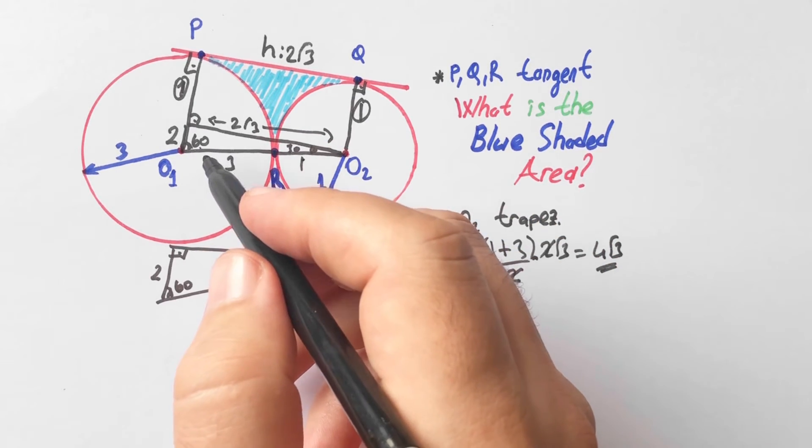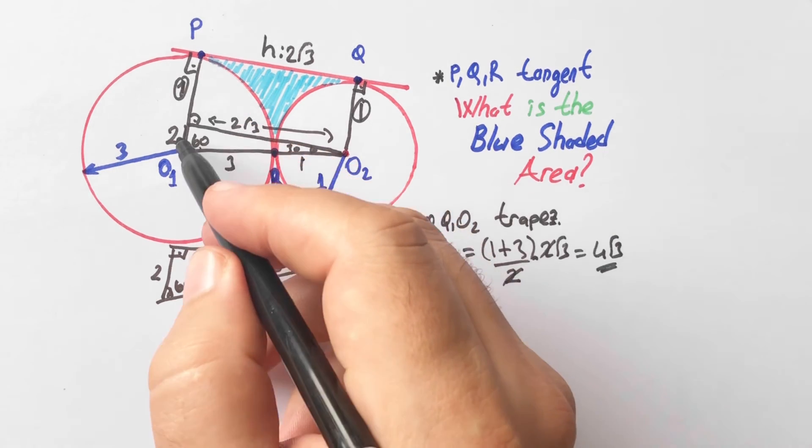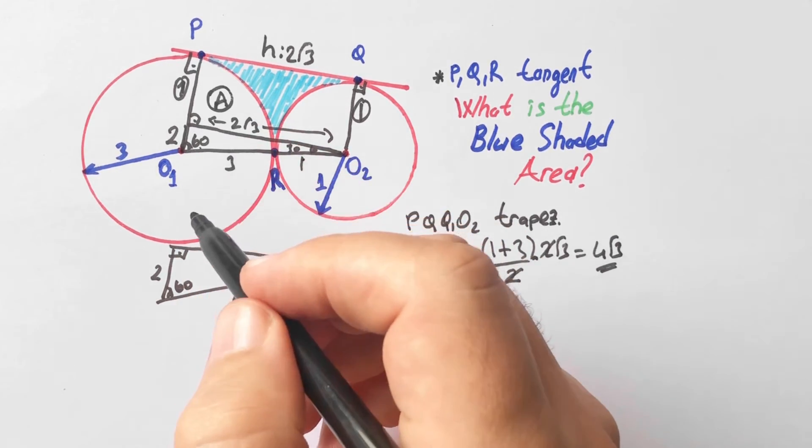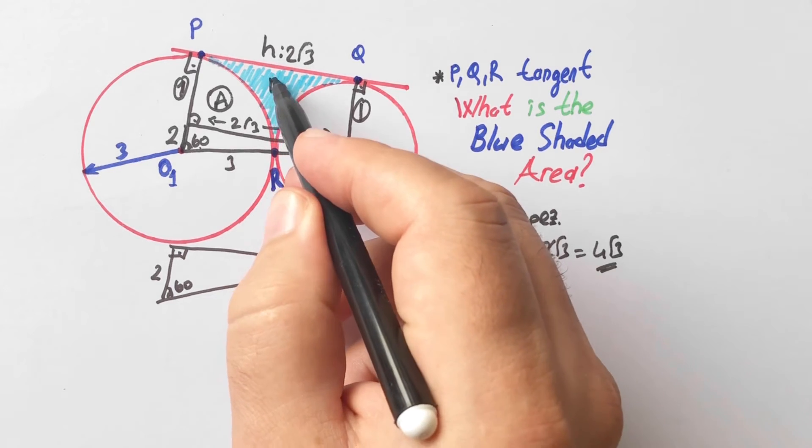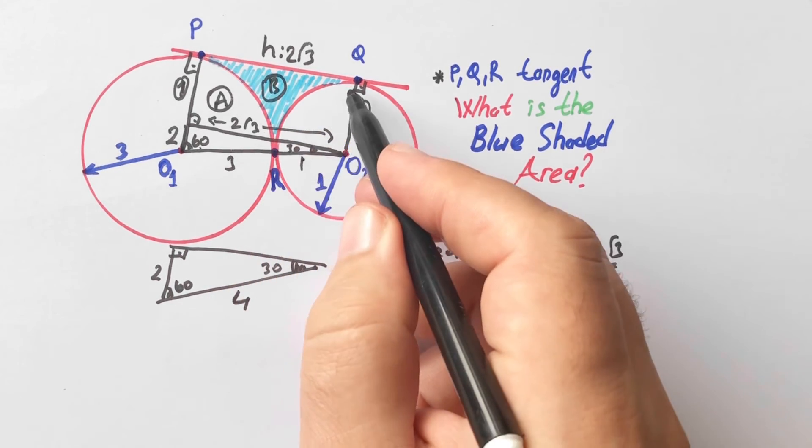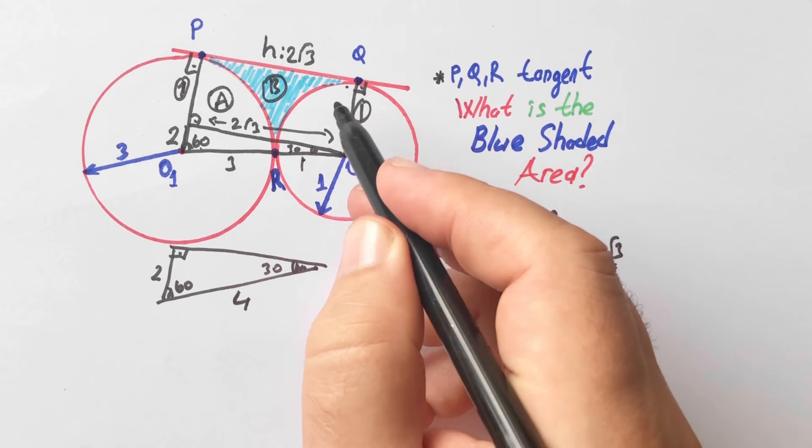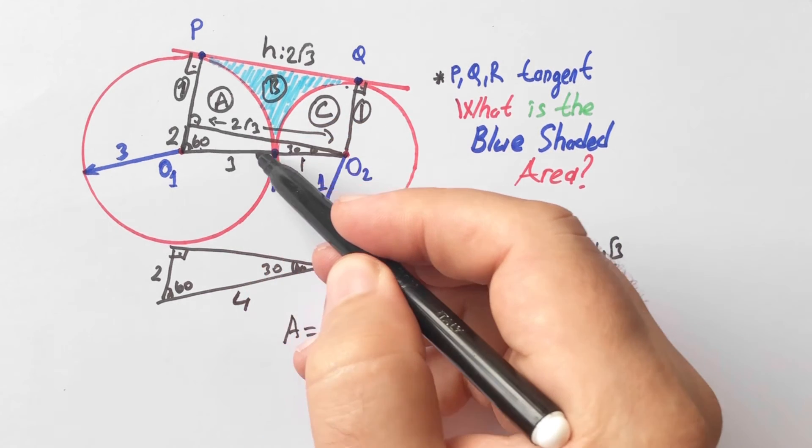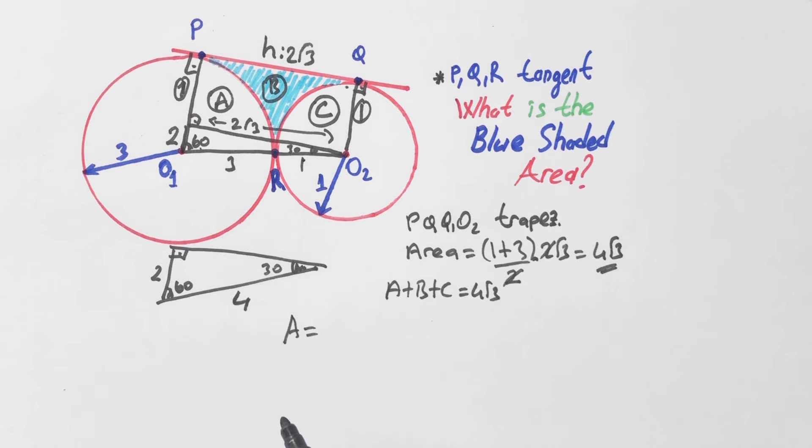So let's call this area A units, and blue area B, and here C units. A plus B plus C is equal to 4√3, right?